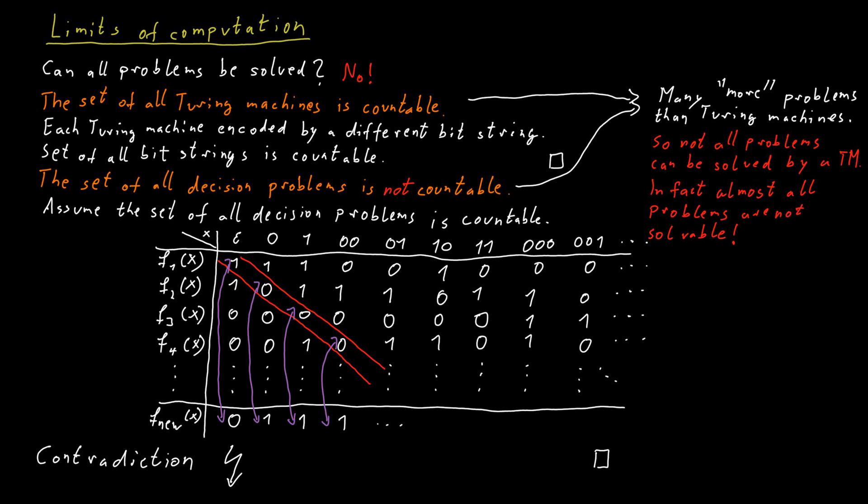What I mean by this is that, say you would pick a decision problem from all possible decision problems at random, then what is the probability that that decision problem you picked at random happens to be solvable by some Turing machine? The probability for this is zero. I don't mean close to zero, I mean it's literally zero. So, almost all decision problems are undecidable.